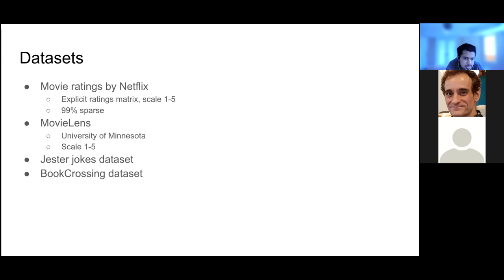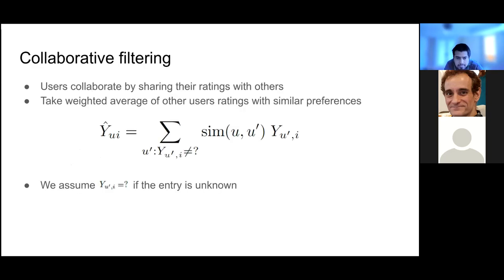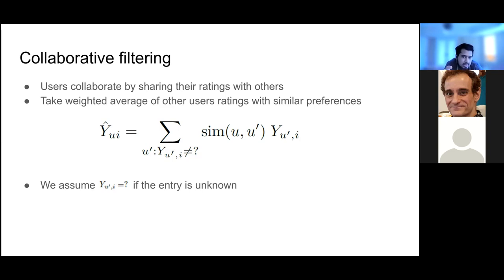The simplest approach for a recommender system: suppose I have some preferences — I would find another user with similar preferences and figure out what rating that user gave to a new item, inferring that my preference for that new item would be similar. That's what collaborative filtering tries to model. Users collaborate by sharing their ratings, and we take the weighted average of those similar users' ratings.